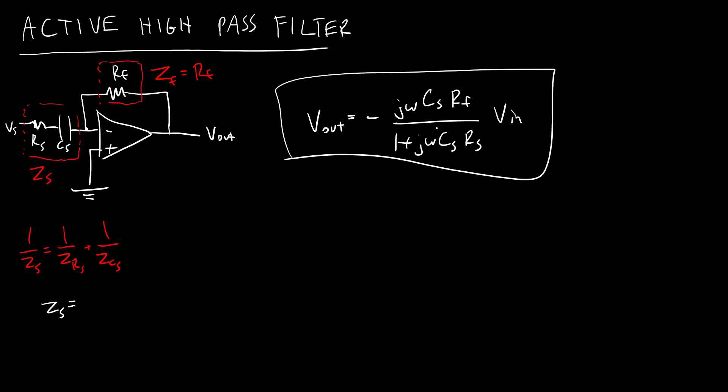And in this case, if we take the limit as omega goes to 0, you see this is going to be 0 over 1, so you still get that high-pass filter behavior where you are killing off lower frequencies. But in the limit as omega goes to infinity, so this 1 becomes negligible and the J omega and CS are all going to cancel, but the RF RS factor isn't going to cancel. So just like we had for the active low-pass filter, you can multiply or amplify the output by this gain that can be greater than 1 depending on your selection of RF and RS.